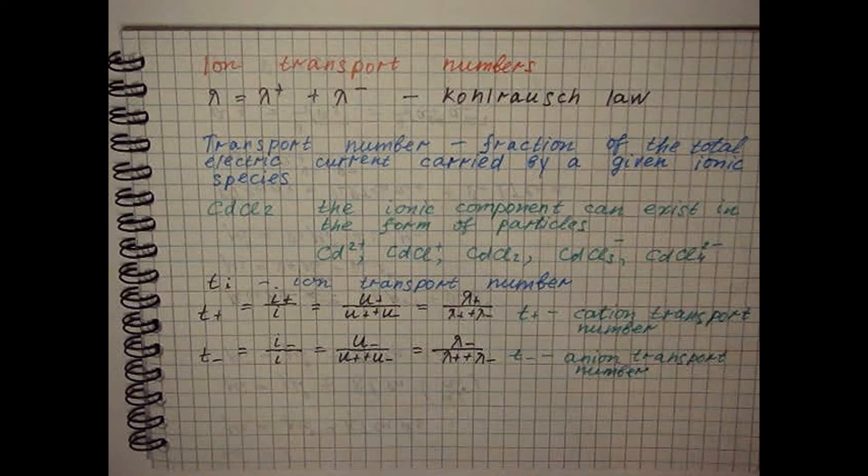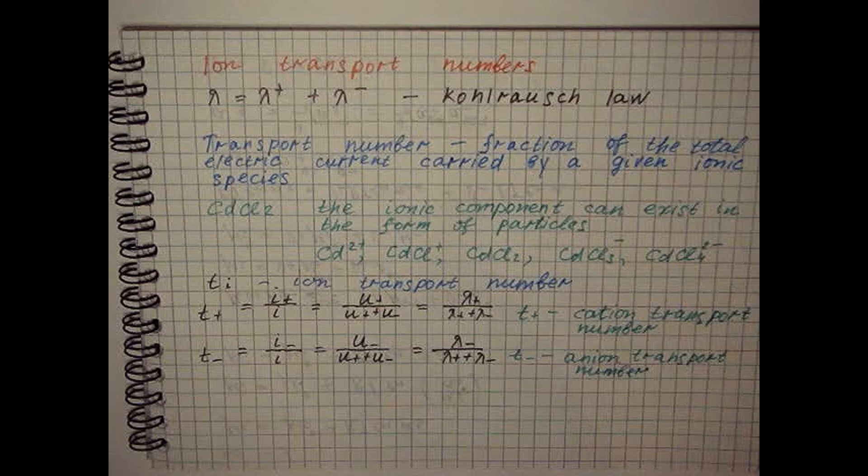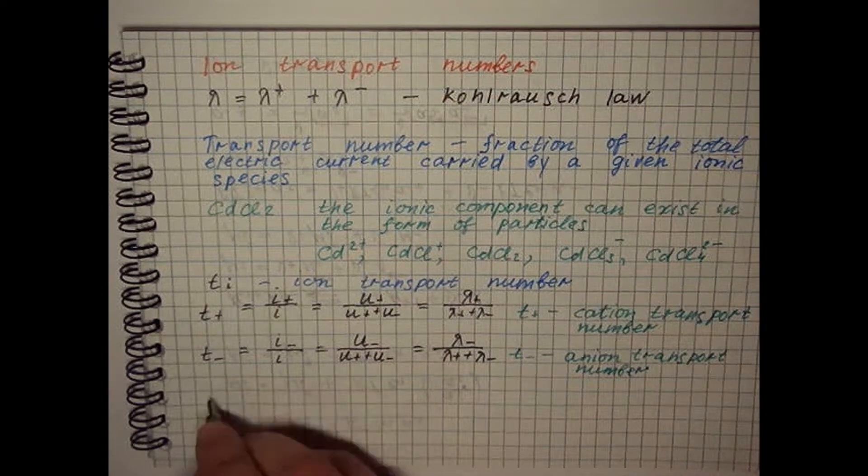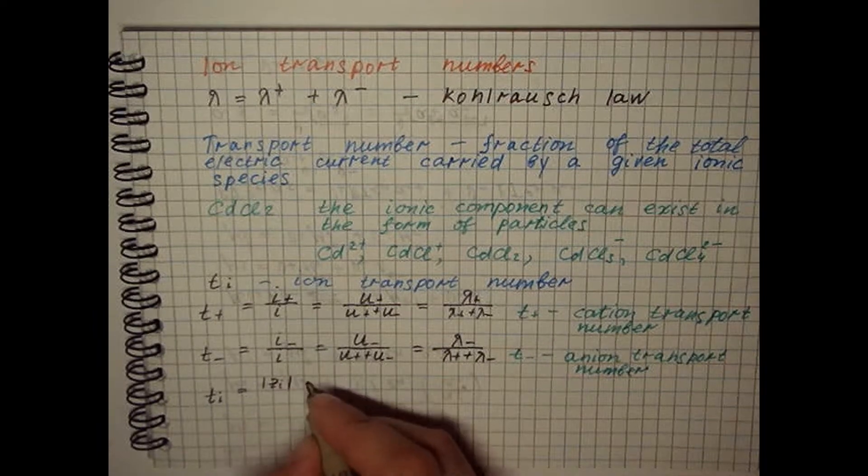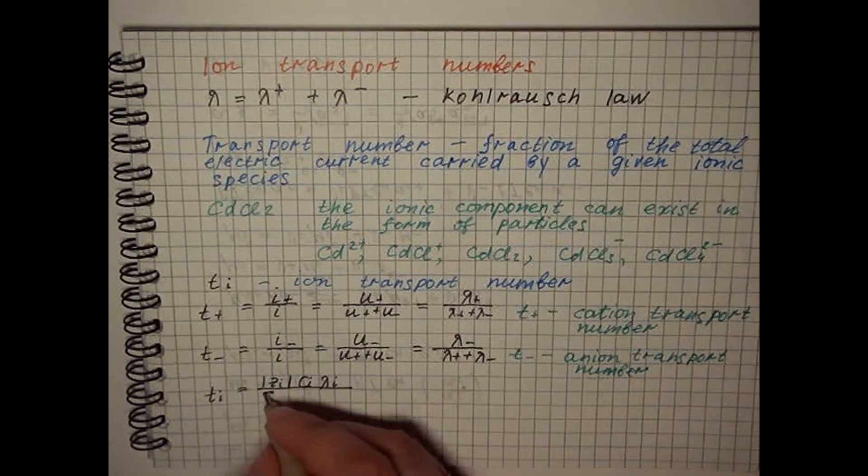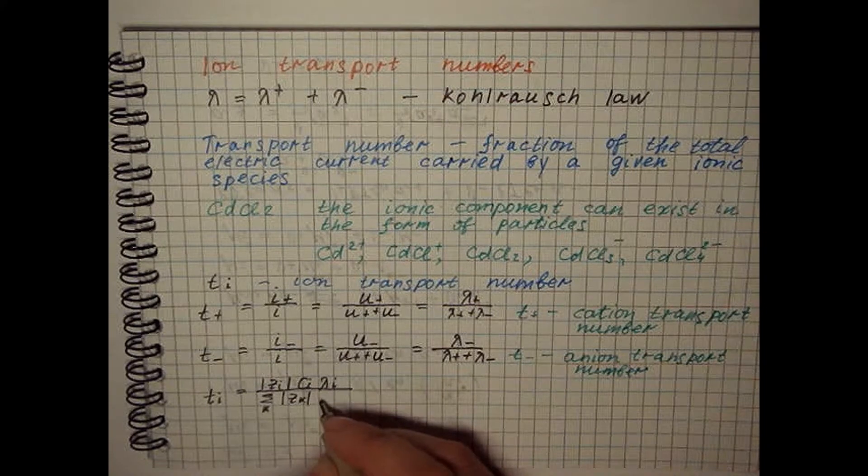If the solution contains several electrolytes, the transport number of a specific ion is defined in terms of the electric transport number of the ion used.